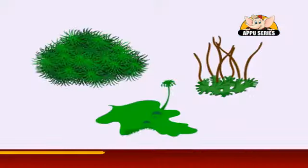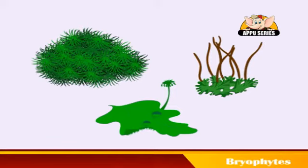Bryophytes are small, low-lying, moisture-loving plants. They have no roots. Some common examples are: